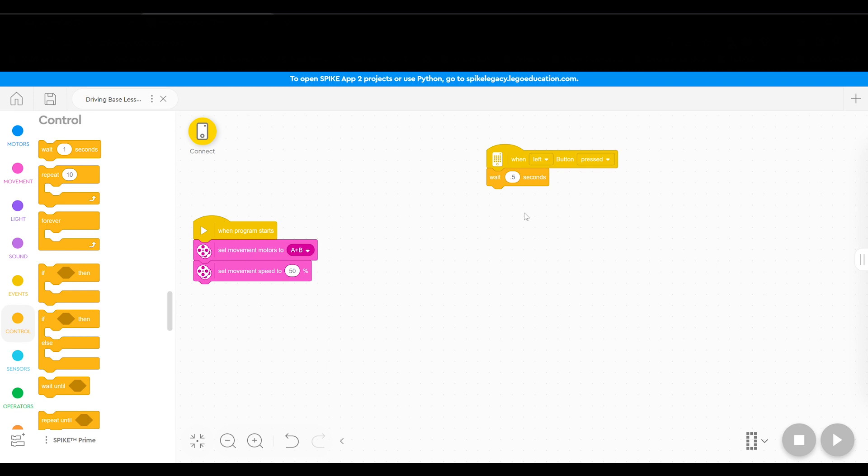If you don't put a wait between the when left button is pressed and the movement commands, the robot will take off and get interfered with by the finger that is still partially in contact with the robot when it starts moving. This will cause the robot to veer off to the left or right. The half second wait gives the students plenty of time to get their hand clear before the robot takes off.